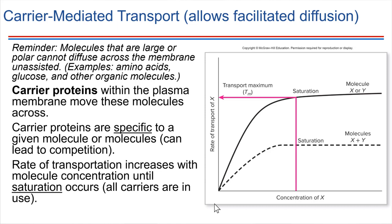The rate of transport correlates to some degree with concentration of the molecule. So for example, with glucose, if we have just a tiny bit of glucose available outside of the cell, and then if we start to increase how much glucose is outside, the rate of transport is going to increase a little bit. But at some point we're going to reach what's called saturation, where the carrier protein just can't move any more quickly than it already is. So carrier proteins can become saturated, which means they're working the best they can — they just can't speed up the rate anymore.